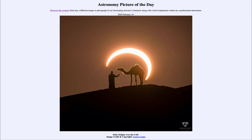Here is an image taken from the United Arab Emirates showing the solar eclipse that occurred about a month and a half ago. It was timed just right so that the rising sun and moon in the background were able to frame a person holding a camel, giving us a very nicely framed photograph of this eclipse.